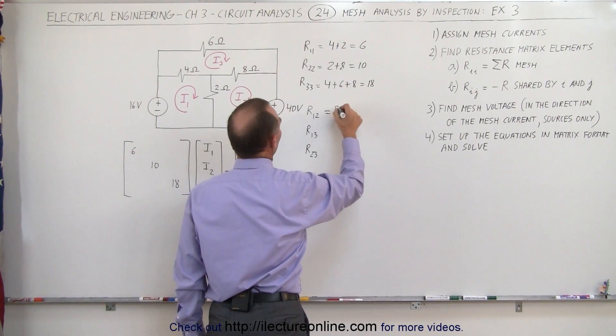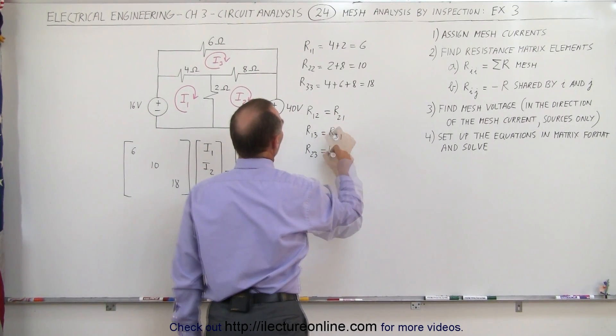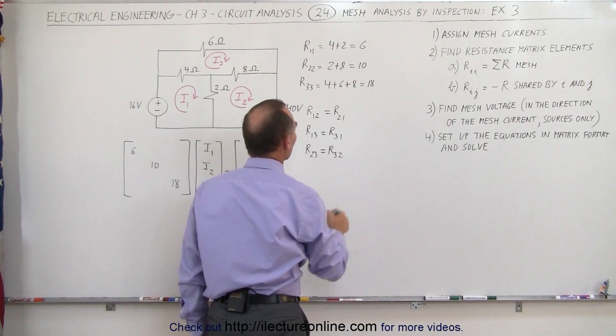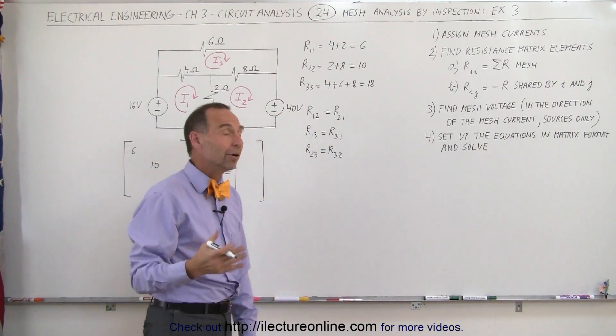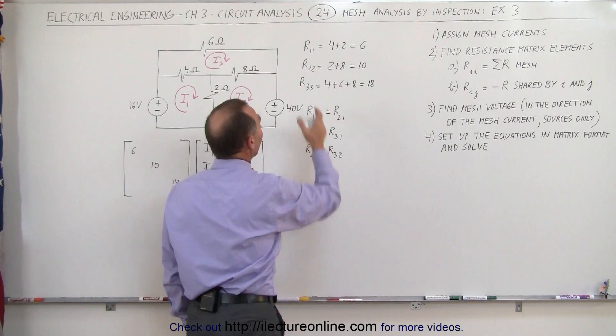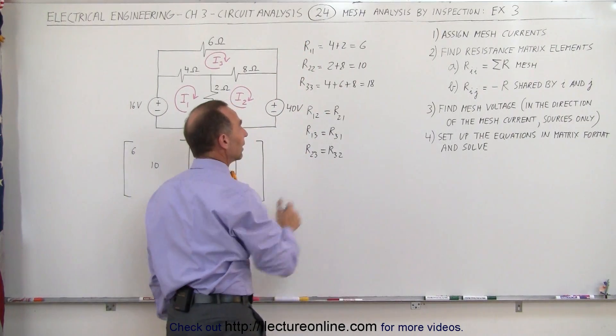Because those are equal to R between 2 and 1, and R between 3 and 2. Notice this gives us six elements, but there's a pair of those. There's three pairs, I should say. And then we have those three. That's a total of nine elements.